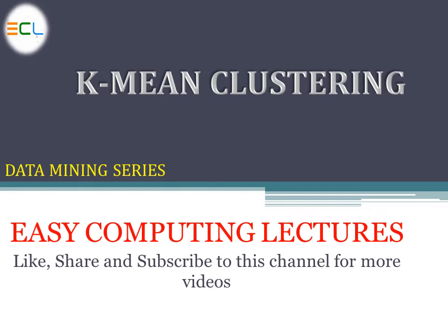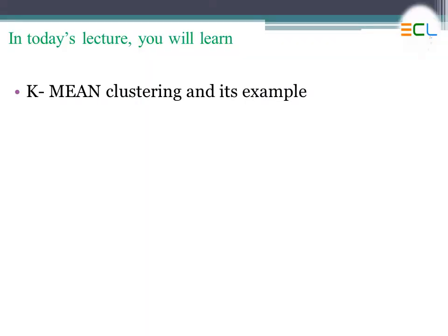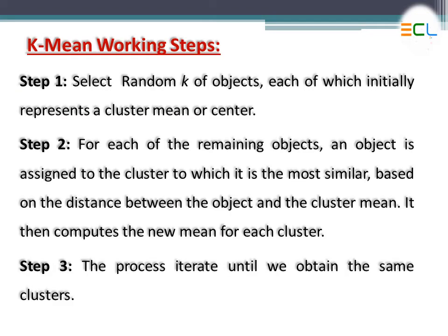Our today's topic is k-mean clustering algorithm. After today's lecture, students will be able to learn about k-mean clustering and its solved example. In the first step, we will take a random k number of objects. For example, if we have a dataset of 10 objects, we first select a random k - suppose k is equal to 2 - meaning we want to make two clusters. Based on this value of k, we take two random means from the objects, known as m1 and m2.